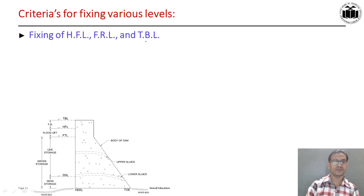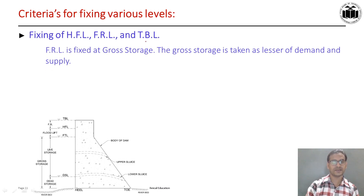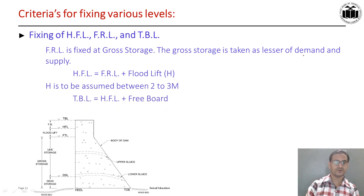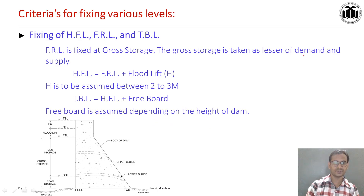For fixing the full reservoir level, high flood level, and top bund level: the FRL should be fixed at gross storage, and gross storage is taken as the lesser of demand and supply. For example, if demand is 4000 m³ and supply is 5000 m³, you choose the lesser value — demand 4000 m³. From FRL, the high flood level is calculated as HFL = FRL + flood lift, where flood lift is assumed between 2 to 3 metres. Then the top bund level is given as TBL = HFL + freeboard, where freeboard is assumed depending upon the height of the dam. In part 1 video this much is covered.